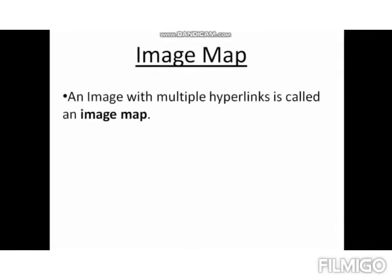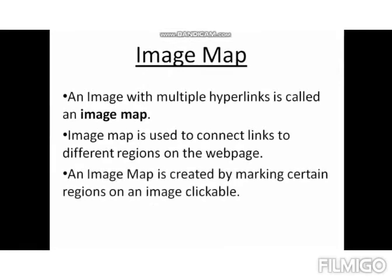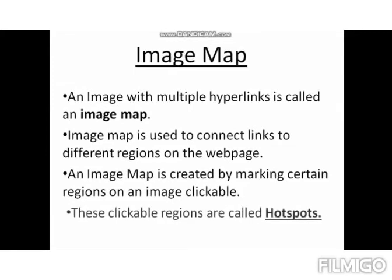Such a concept is called an image map. An image with multiple hyperlinks is called an image map. Image map is used to connect links to different regions on a web page. An image map is created by marking certain regions on the image — these clickable regions are called hotspots.